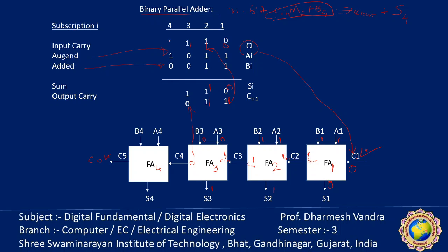In the final stage, A4 = 1, B4 = 0, and the carry-in is 0. So 0 plus 1 plus 0 equals 1. The sum is 1 and the final carry-out is 0.